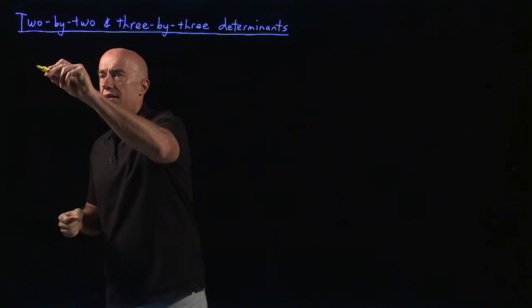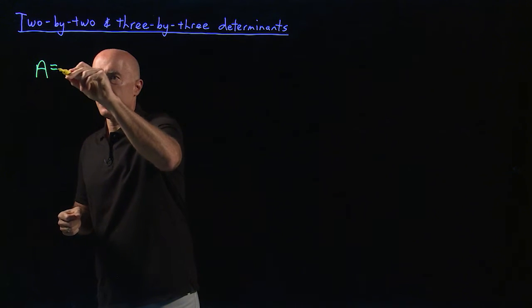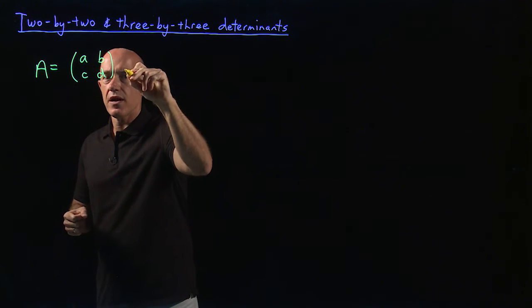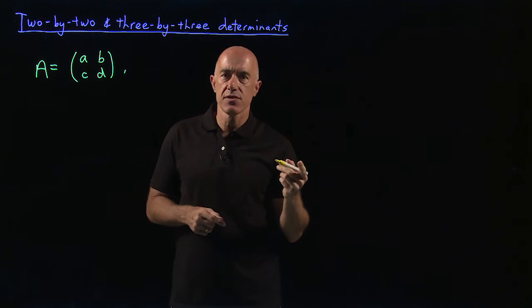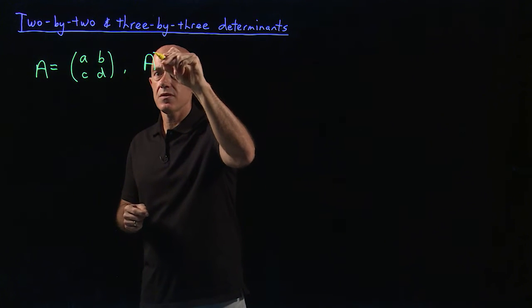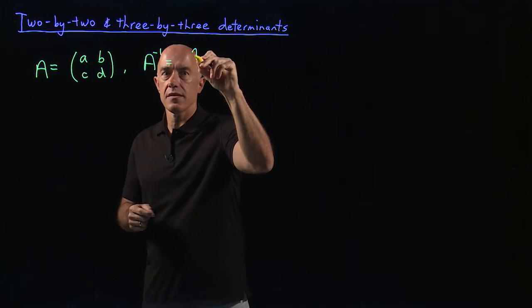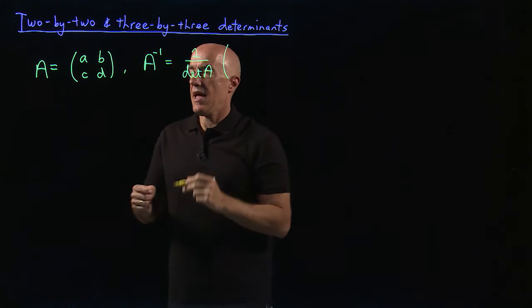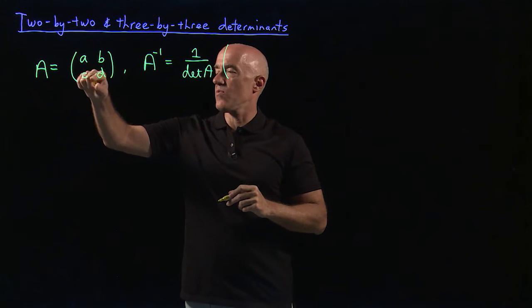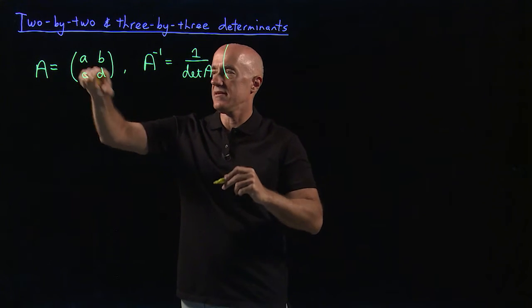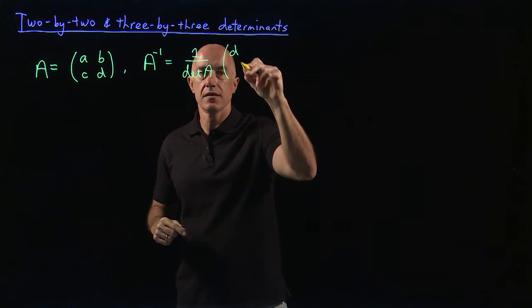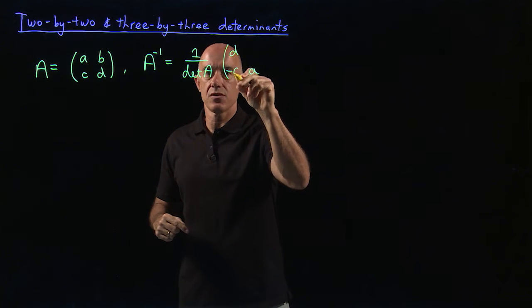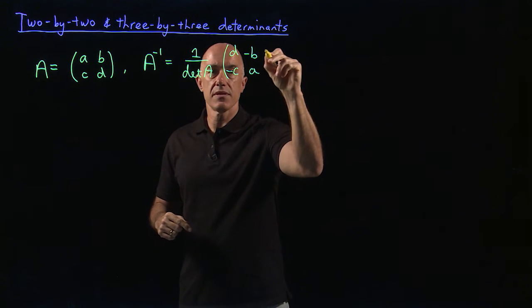We had already introduced the 2 by 2 matrix A, B, C, D, where we calculated the inverse of this matrix. So the inverse, I wrote as 1 divided by the determinant of A. And the inverse matrix was obtained by switching D and A, so D and A on the diagonal, and negating the off diagonal elements of the matrix.